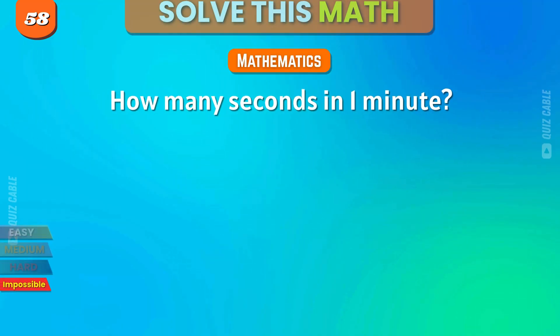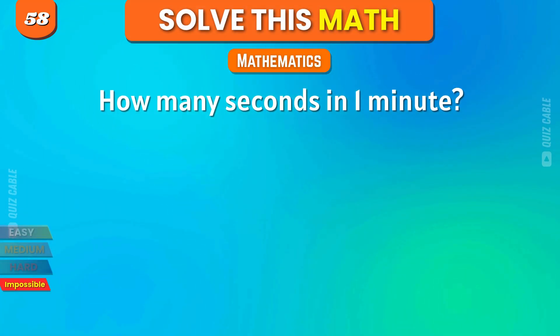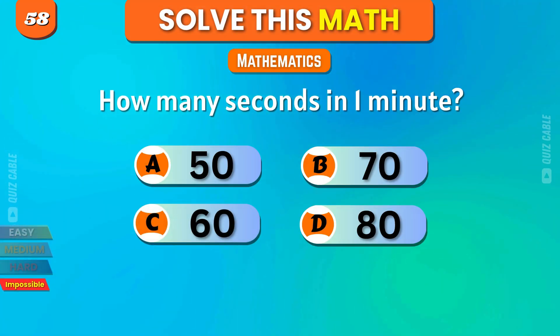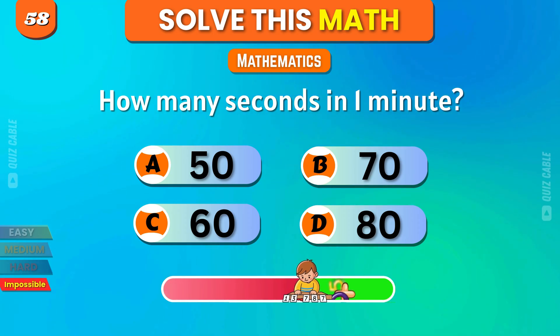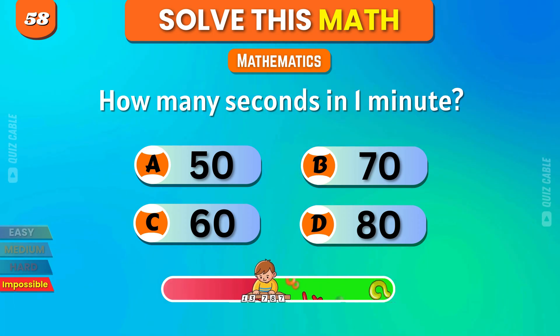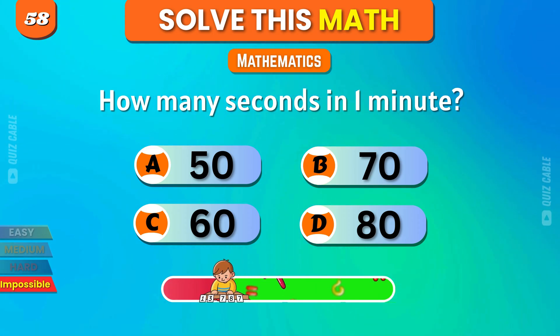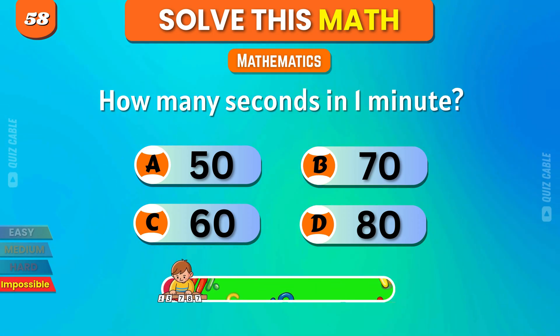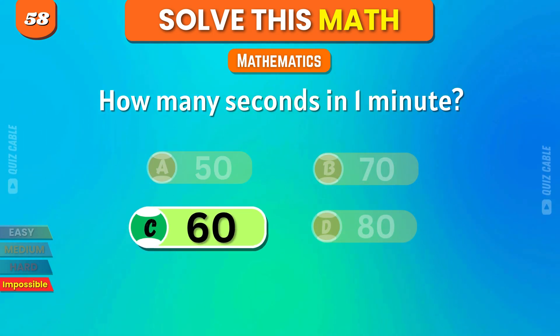How many seconds are in 1 minute? 50, 70, 60, 80. Correct, 60.